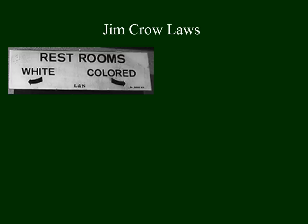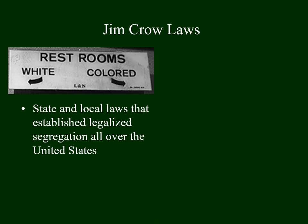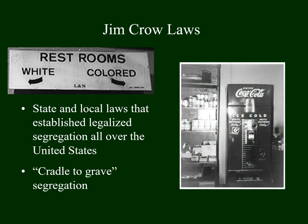Once the Supreme Court declared that it was legal to segregate based on race, state and local communities passed their own laws. These were often referred to as Jim Crow laws, which established segregation all over the country. Restrooms, drinking fountains, schools, movie theaters, sports stadiums, and courtrooms were all segregated. People called this cradle-to-grave segregation because it began at birth with hospitals and didn't end even with death, as funeral parlors and cemeteries were segregated. Even pop machines were segregated.